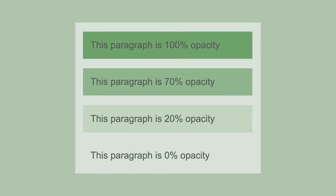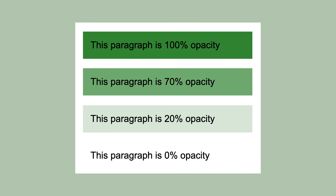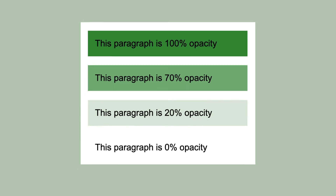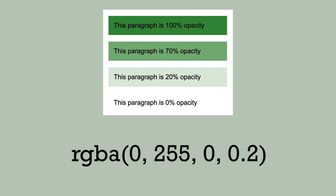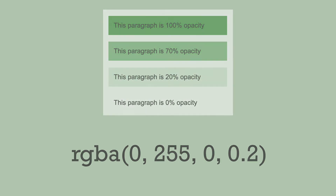One nice thing about RGB is that you can add an alpha value — an A to the RGB — which allows you to specify the opacity of the element as well. This fourth value ranges from 0.0, totally see-through or invisible, to 1.0, totally opaque or solid. The value of 1.0 is the default and would be 100% opacity. 0.7 would be only 70% opacity, so you can see through it, and 0.2 would be 20% opacity.